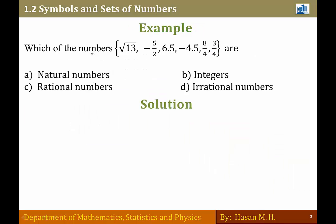Example: Which of the numbers — square root of 13, minus 5 over 2, 6.5, minus 4.5, 8 over 4, and 3 over 4 — belong to natural numbers, integers, rational numbers, or irrational numbers? (أي من الأعداد التالية ينتمي إلى: natural numbers، integers، rational numbers، irrational numbers؟)